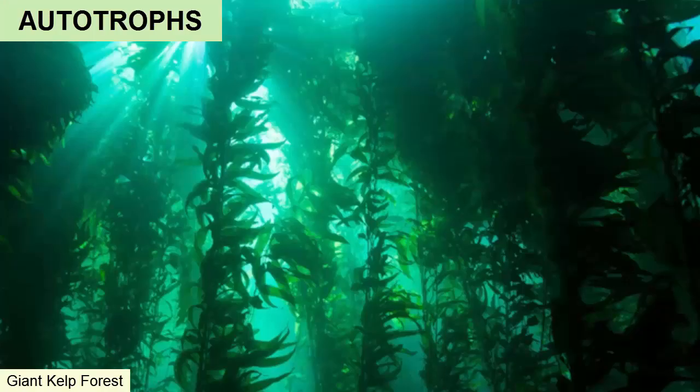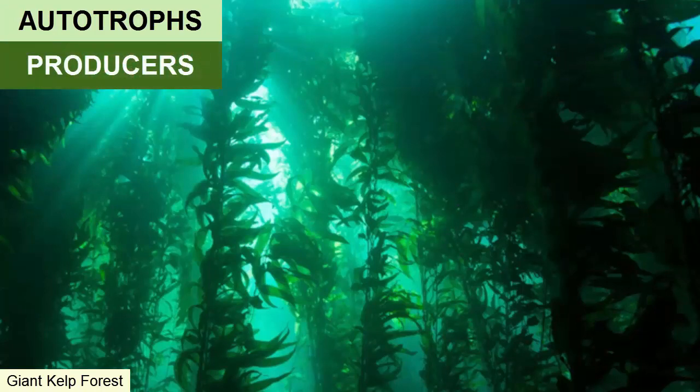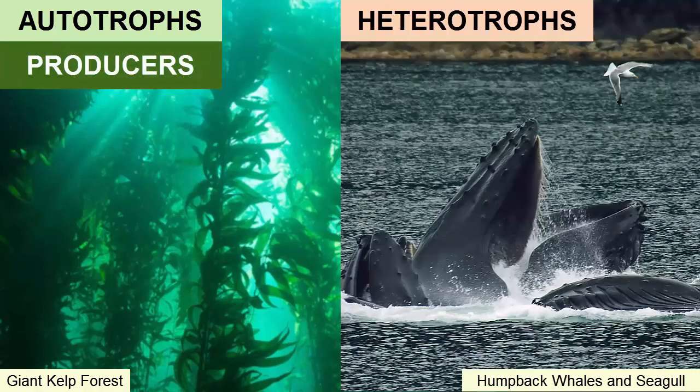Autotrophs make their own food — that means they are producers. Heterotrophs must consume food; they cannot make it for themselves. We can also call them consumers.